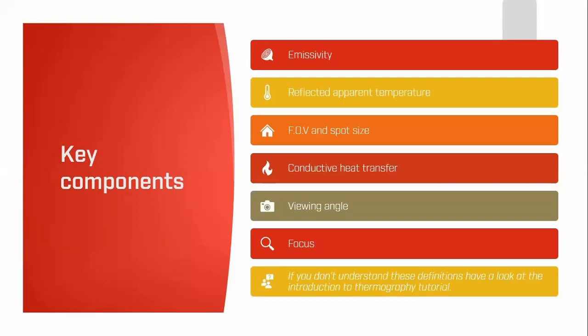These key components are: emissivity — how well the surface emits radiation; reflected apparent temperature — background radiation reflected into the camera; field of view — the camera's ability to measure a target at a distance; conductive heat transfer and conduction patterns; viewing angle and its effect on measurement; and focus. These have been covered in previous tutorials on the ITC website, or sign up to one of our certification courses.